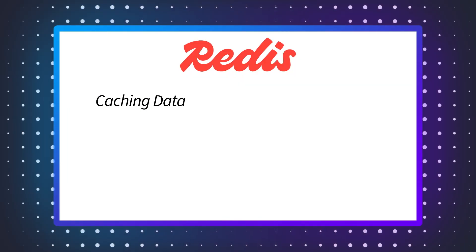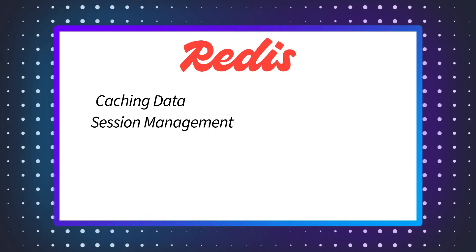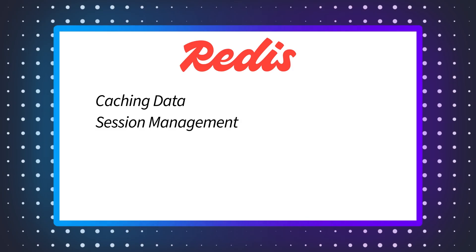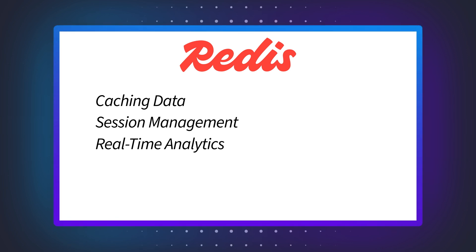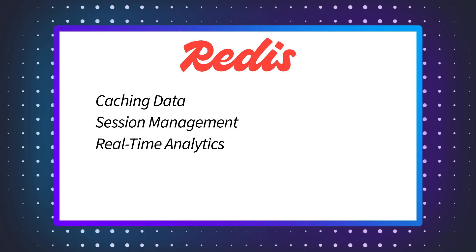Let's talk about where Redis shines. Here are some of its most common use cases. First up is caching — Redis is famous for caching data. Think about a site that loads super fast because it doesn't have to query the database every time. Then there's session management: many apps use Redis to store session data, like when you log into a website and it remembers you. And then there's real-time analytics — Redis is often used to analyze data in real time, making it ideal for apps that handle a high volume of data and need instant results.